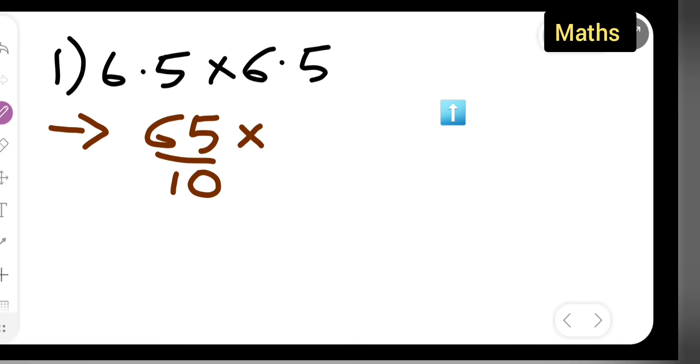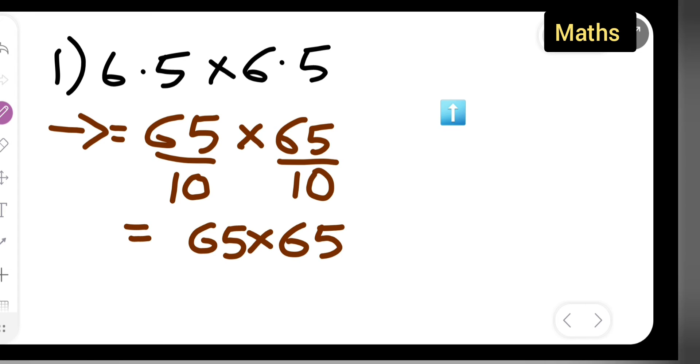multiplied by 65 upon 10. You can cancel it directly, or else what you can do is don't cancel this term, write down this 10 as it is. Now this is equal to 65 multiplied by 65 upon you are going to get 100, right?